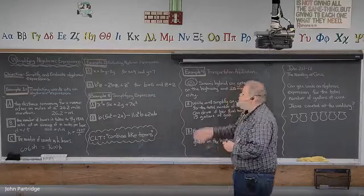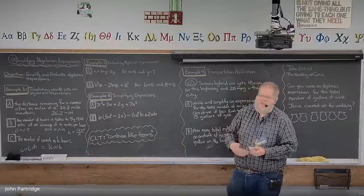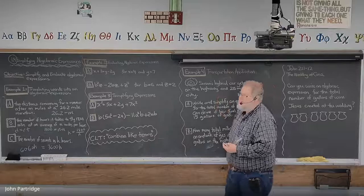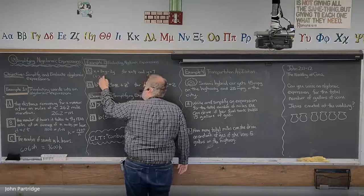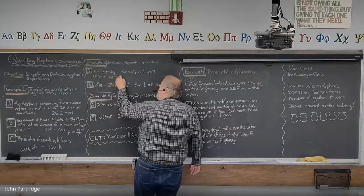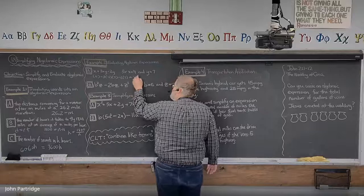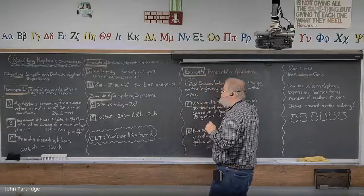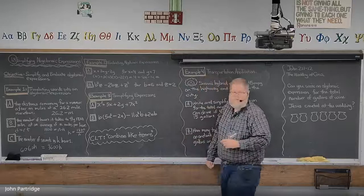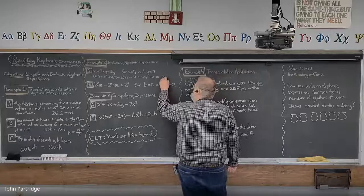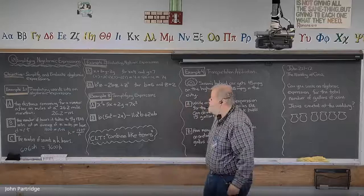Right now we want to evaluate. We're going to use the substitution property — we'll replace all of the x's with 4 and all of the y's with 7, then follow the order of operations. Always use parentheses when you use the substitution property. So: 4 plus 3 times 4 times 7 minus 2 times 7. That gives us 4 plus 12 times 7, which is 84, minus 14, which is 70. Then 70 plus 4 is 74.